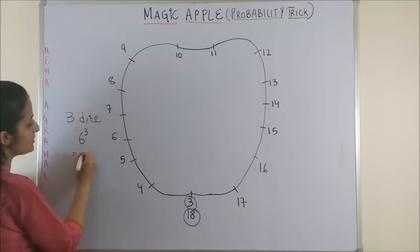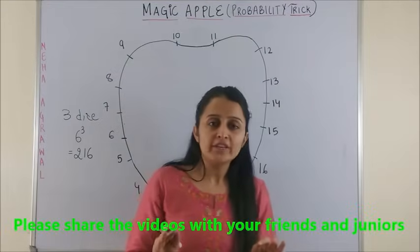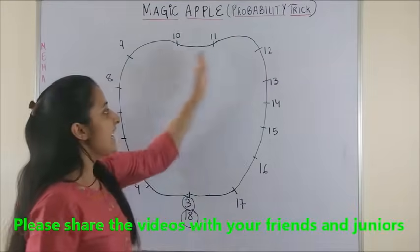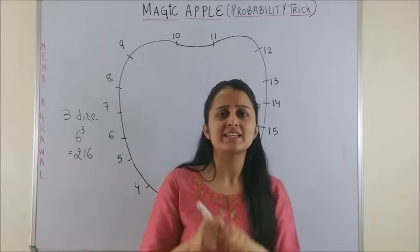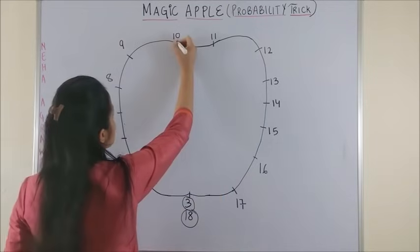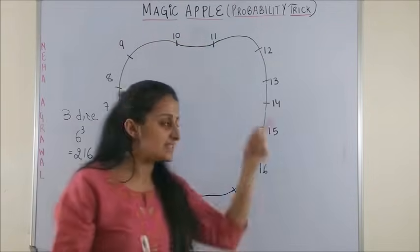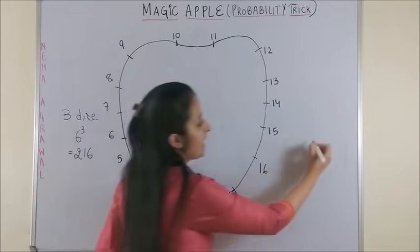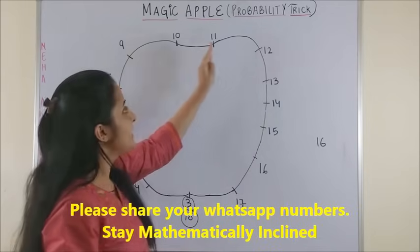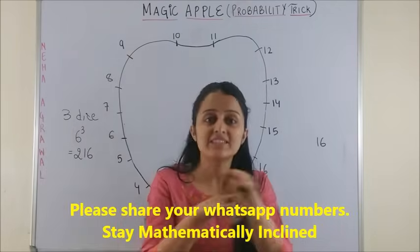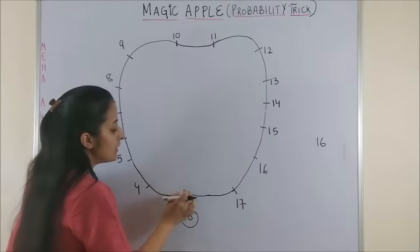Now, we already know that the total number of outcomes is always 6³, which is 216, when three dice are rolled. All you need to do is fill this apple with the favorable outcomes. But before we do that, why did we select an apple? Because this shows two positions, 10 and 11. If you count these numbers, there are 16 of them, and the middle point comes at two positions: 10 and 11, which have the same value.